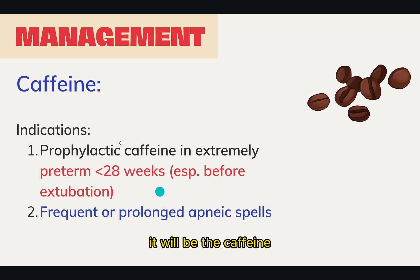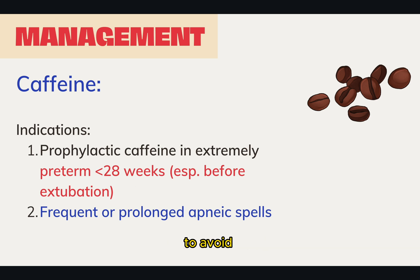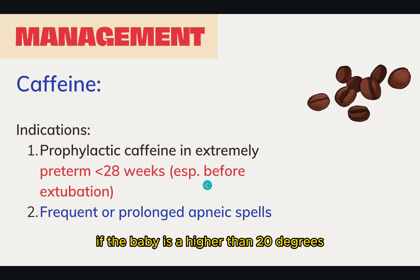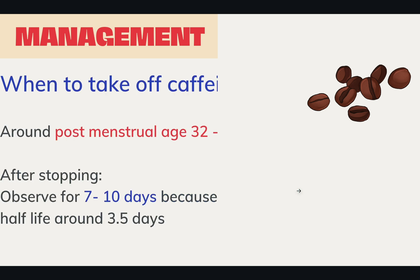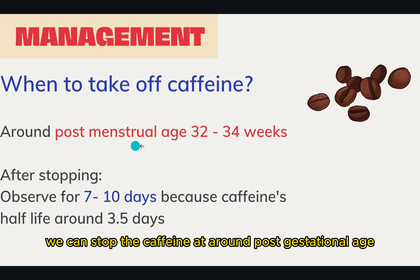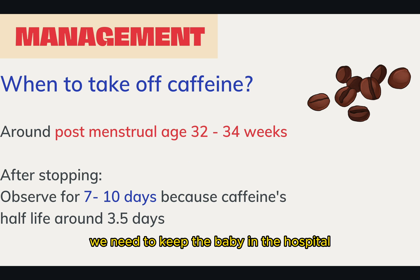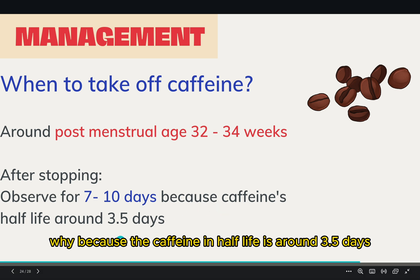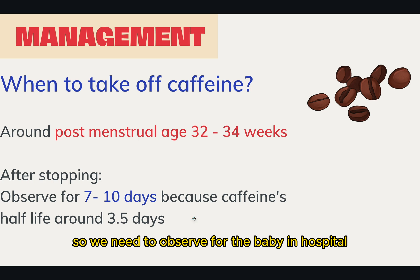The third thing is medication — specifically caffeine. If the baby is born less than 28 weeks, we can give prophylactic caffeine, especially before extubation, to avoid apnea of prematurity. If the baby is older than 28 weeks but has frequent and prolonged apnea, we can also give caffeine. We can stop caffeine at around post-menstrual age 32 to 34 weeks. After stopping, we need to keep the baby in hospital for at least one week to 10 days, because caffeine's half-life is around 3.5 days and the effect will completely go off in around one week to 10 days. We need to observe whether the baby has apnea, because apnea at home can be dangerous.